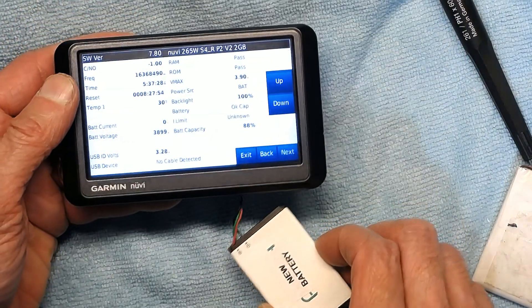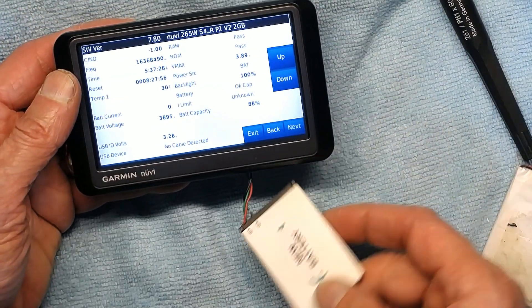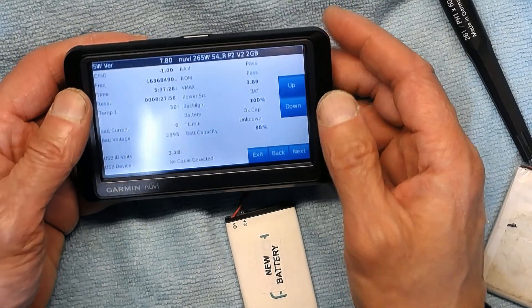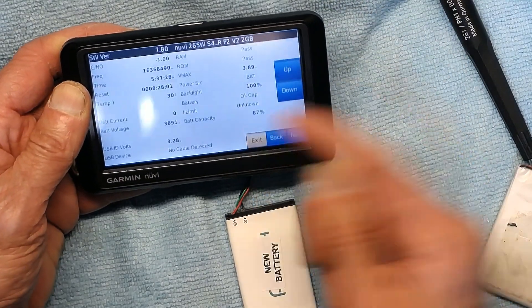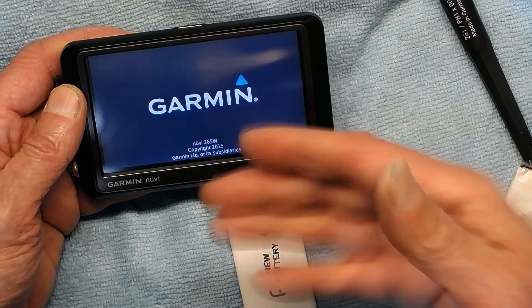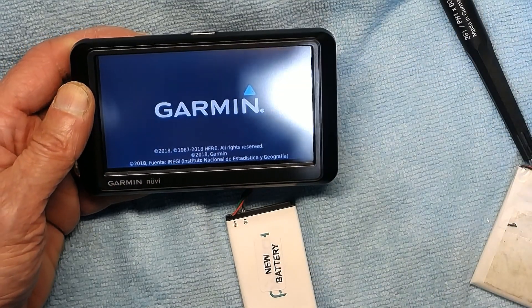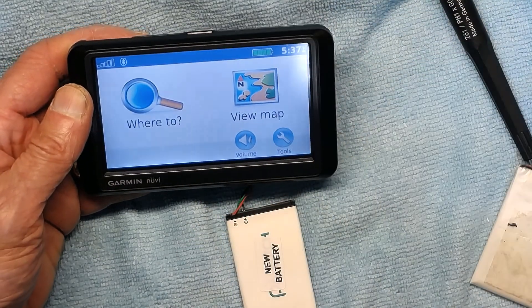So basically this is how you do a battery diagnostic and to see if the battery is good or not. And then you can exit from the screen and take you back to the normal routine to boot up the GPS to the normal screen.